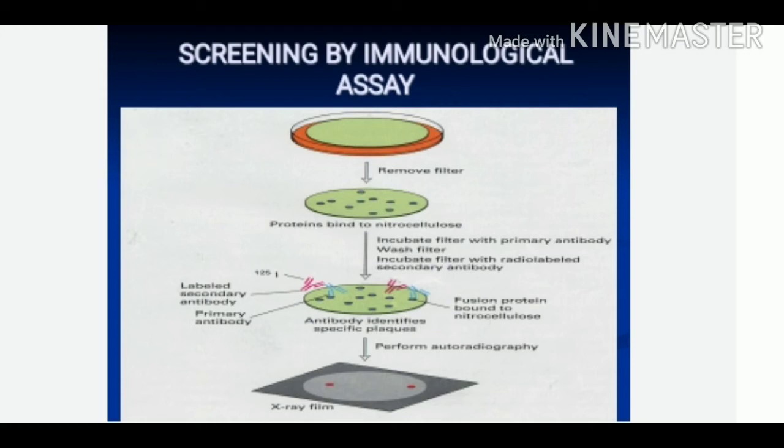The membrane is washed to remove the unbound primary antibody. In the next step, treatment with secondary antibody is done. The membrane is incubated with a secondary antibody recognizing the primary antibody. The secondary antibody is labeled and will bind to the primary antibody, allowing detection of its location. The membrane is washed to remove unbound secondary antibody. In the last step, an X-ray film is developed which tells us about the clone of interest.